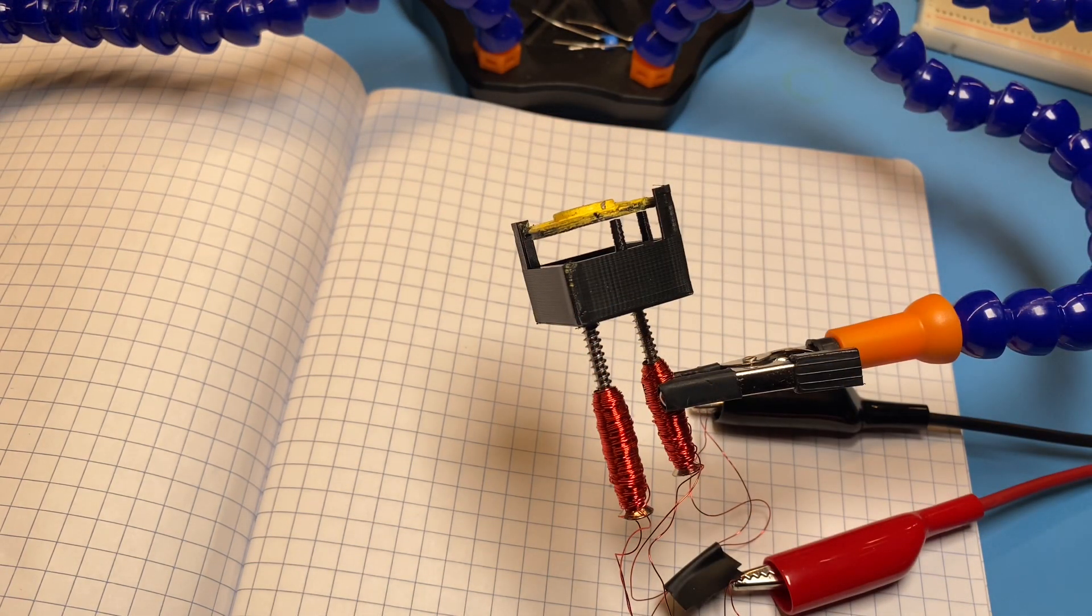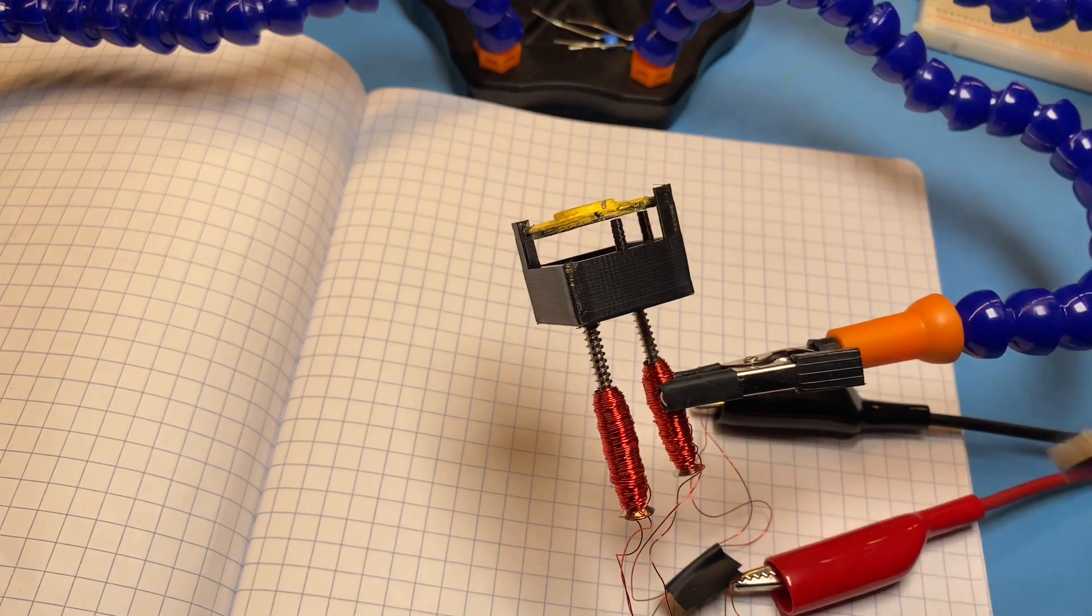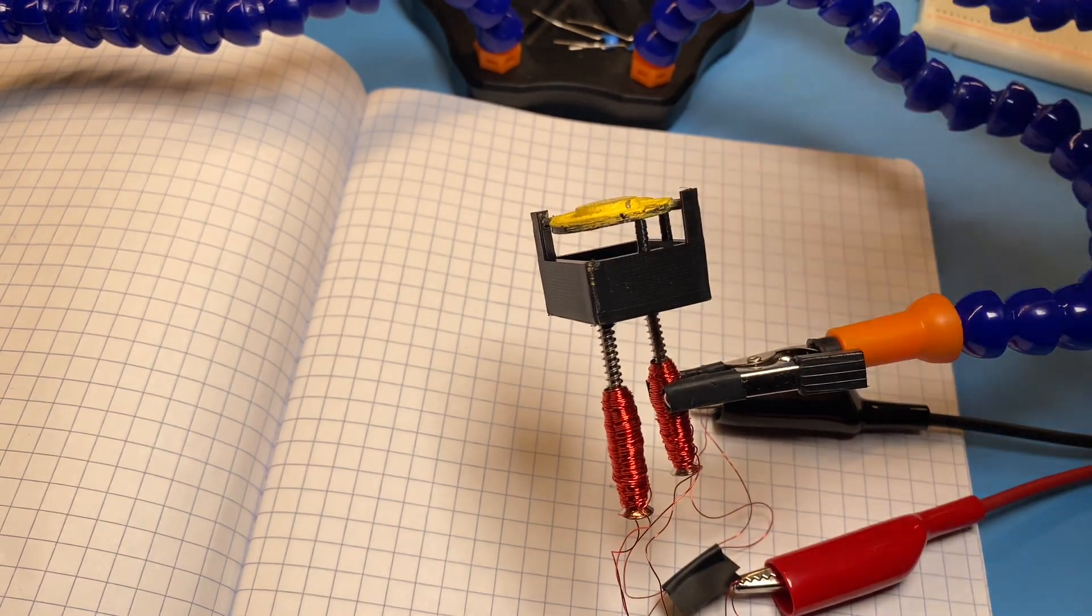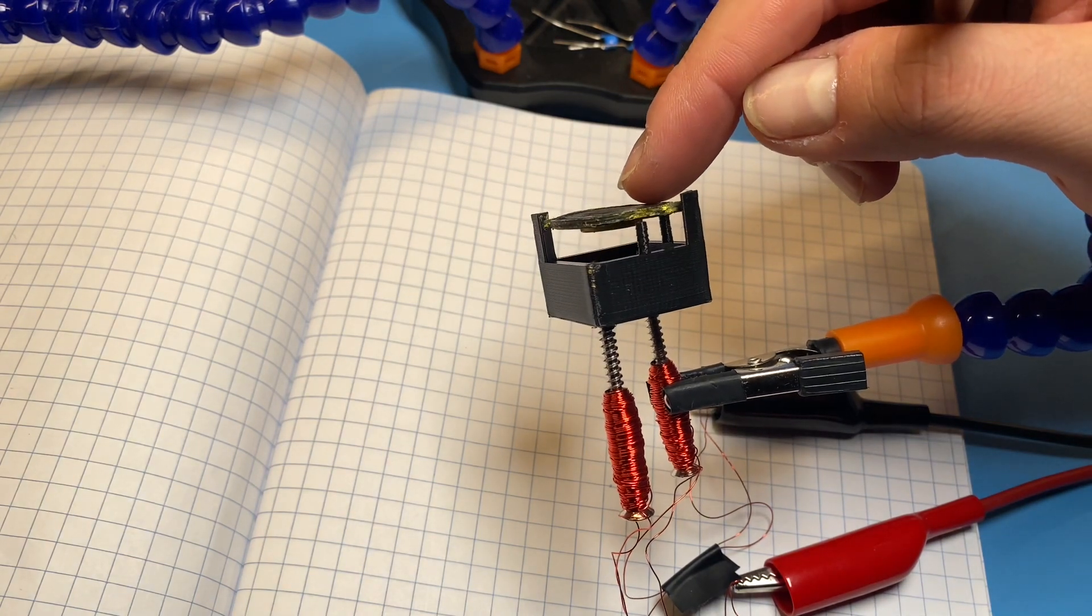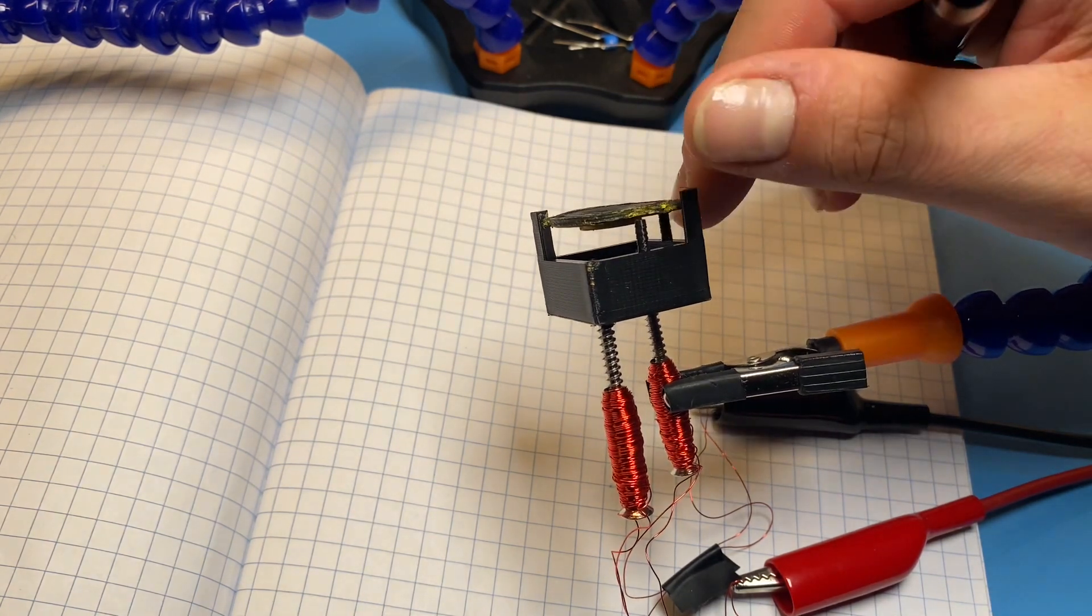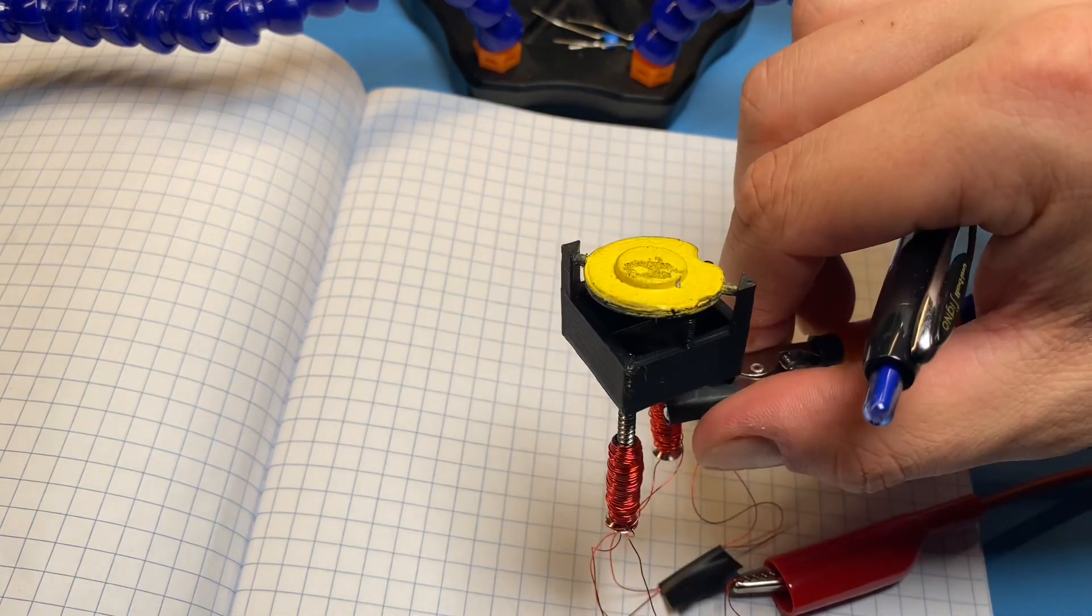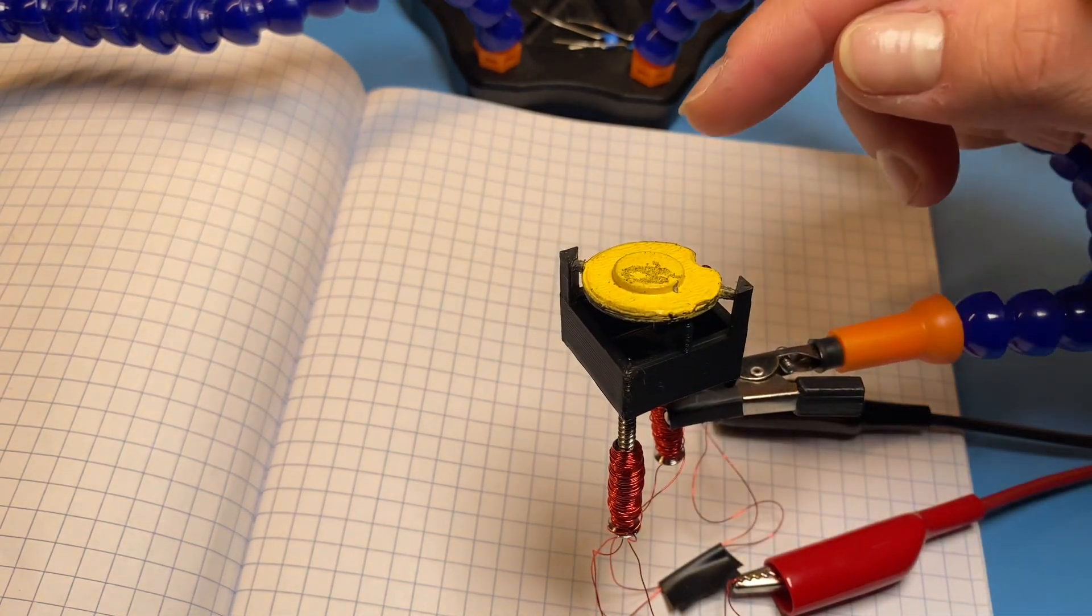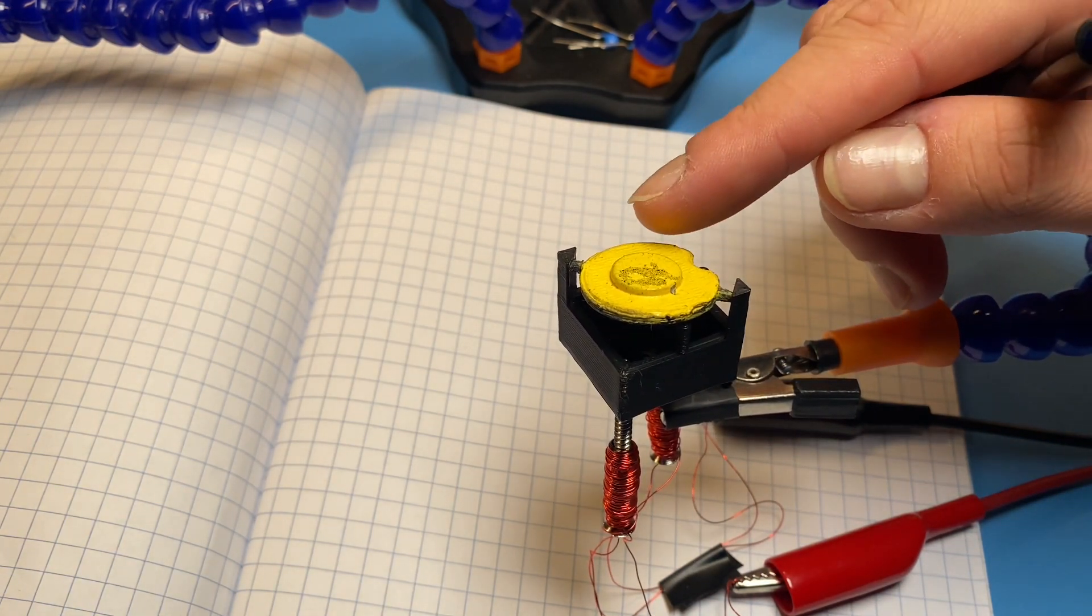Another important feature of my design are these two little posts that extend from the base. These two posts essentially stop the rotation of the dot as it turns over and prevents it from going too far, so that we can see either the black side or, in our case here, the yellow side. There's a little notch in the dot itself to allow it to pass as it rotates.